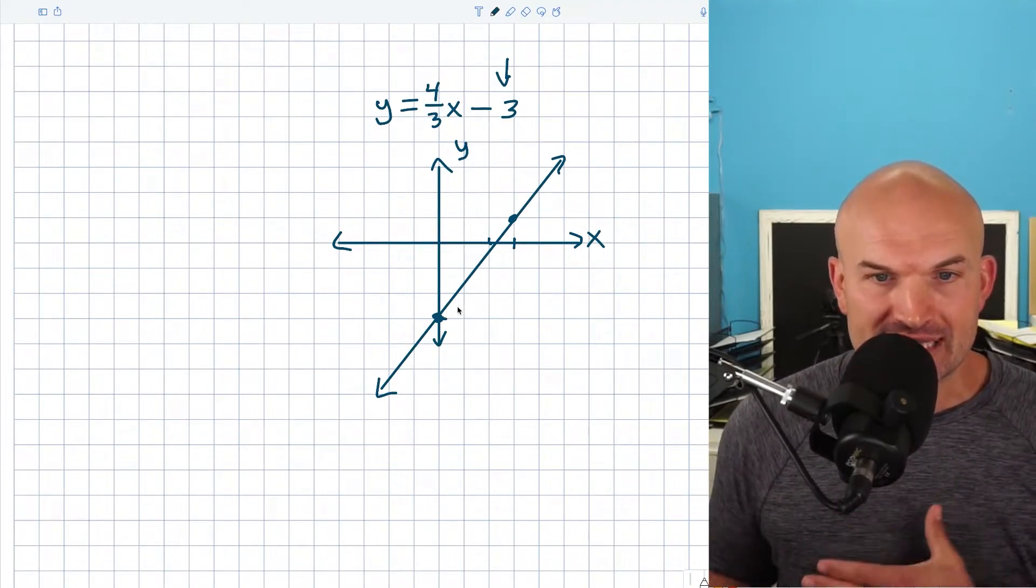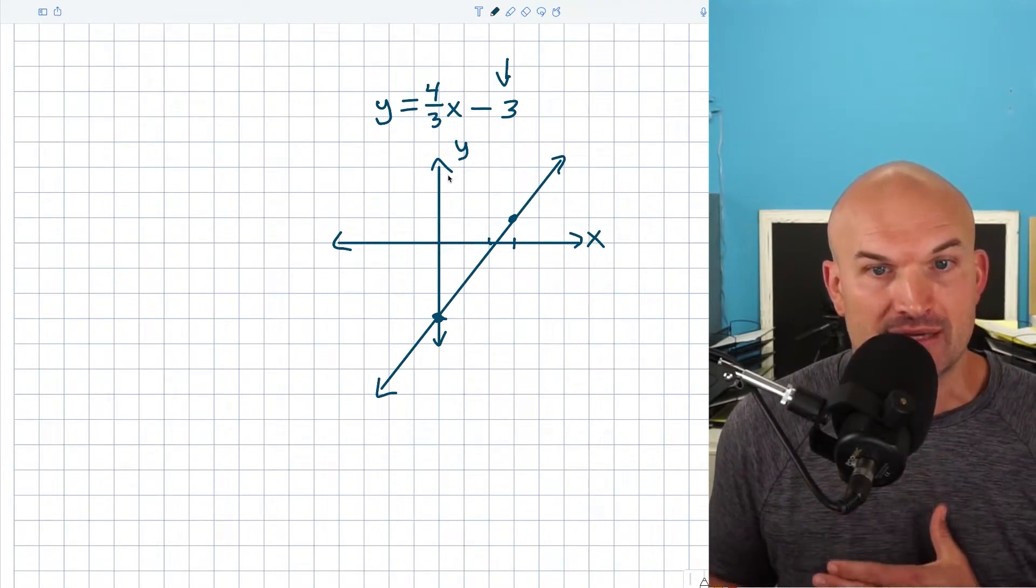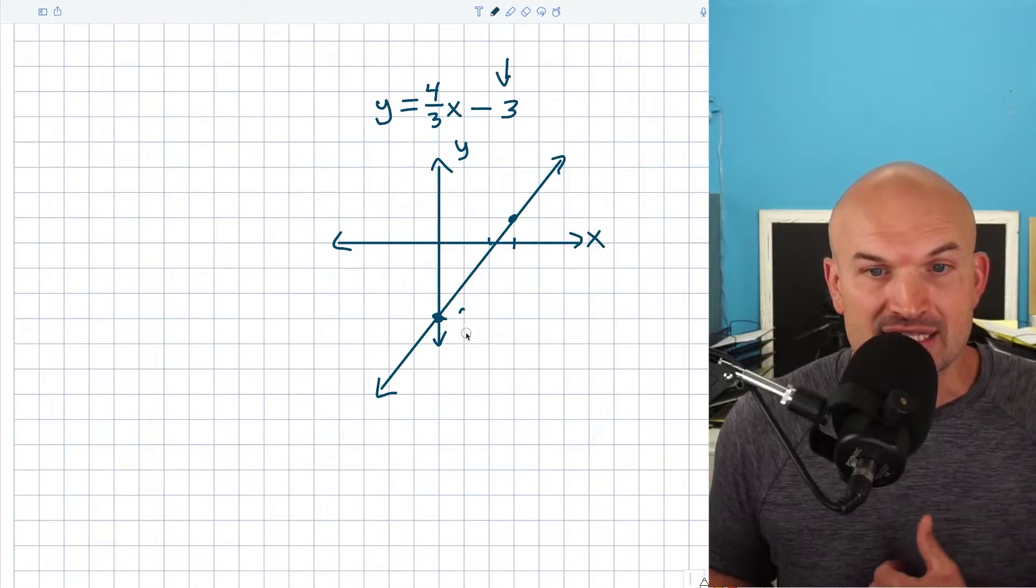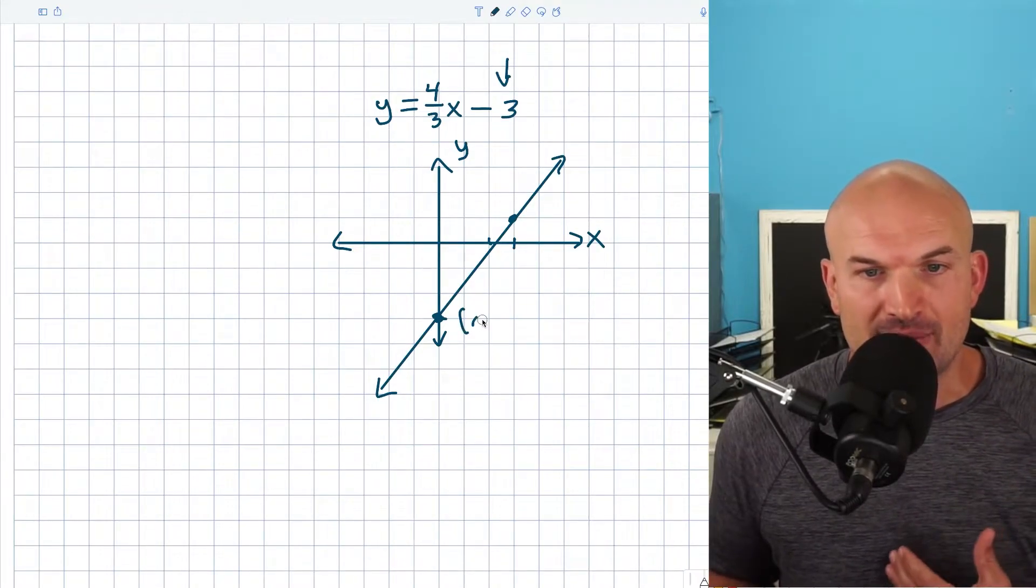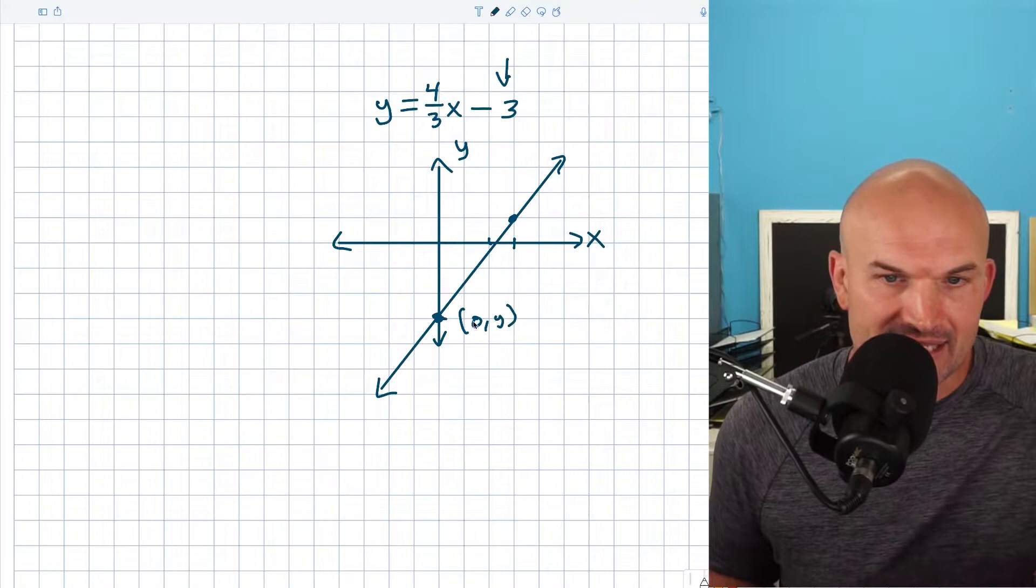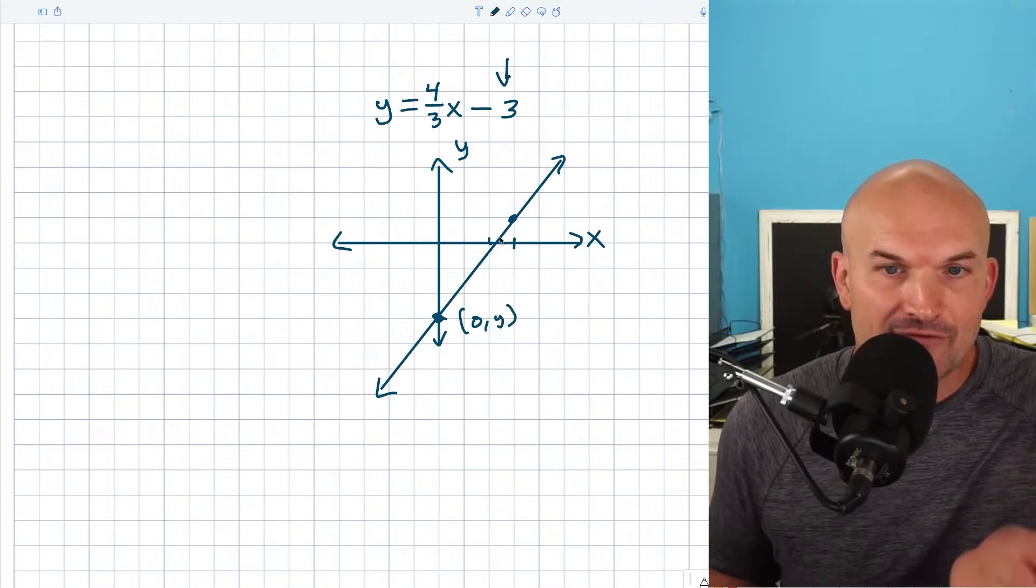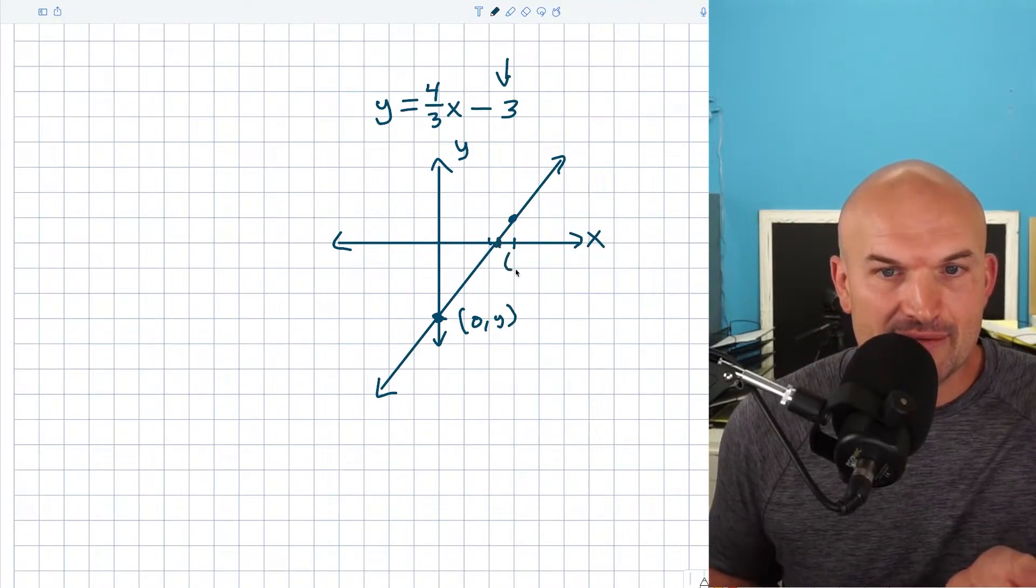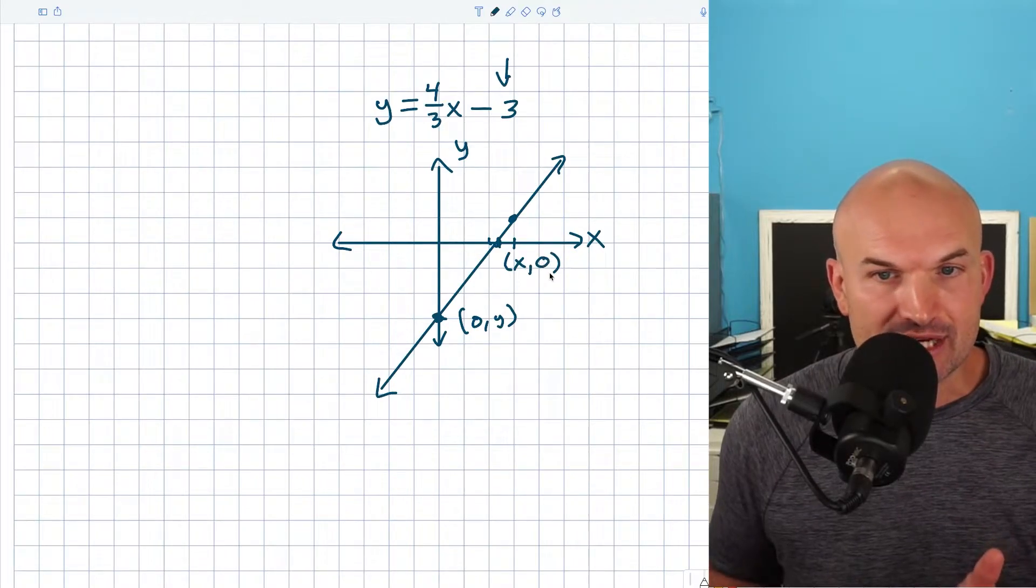So the main thing I want you to understand in this case is when we're looking at the y-intercept, right, that's where the graph crosses the y-axis. We know this value is zero, negative three, but I really just want you to understand that it's zero and then we have some y value. And for the x-intercept, right, that's going to be some x value, but then y is going to be equal to zero.